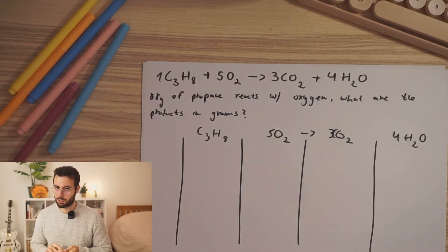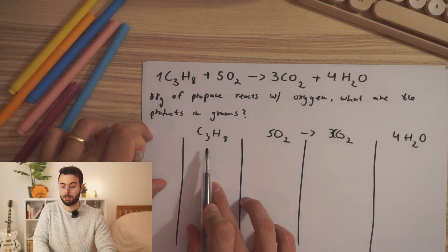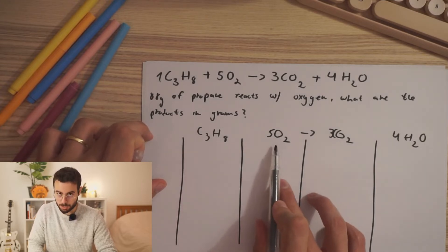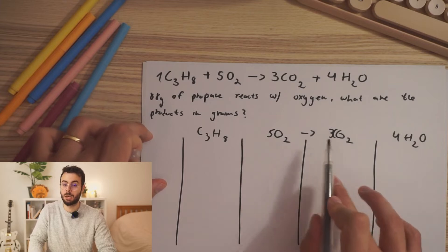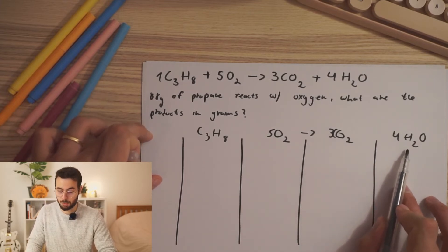Let's try to understand exactly what does it mean. It means that for every mole of propane that is reacting with five moles of oxygen, we will get three moles of carbon dioxide and four moles of water.